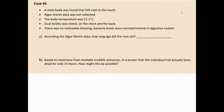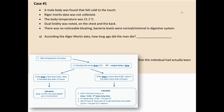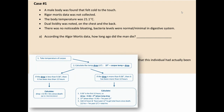Case number one: a male body was found that felt cold to the touch, no rigor mortis data, body temperature was 21.1 degrees Celsius, dual lividity on the chest and back, no noticeable bloating. We are not going to do anything with the bacteria levels. According to the algor mortis data — the cooling of the body — how long ago did the man die? We need to use the algor mortis flowchart.